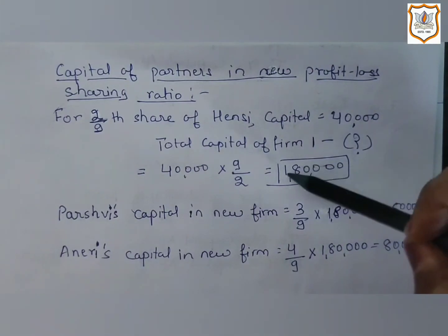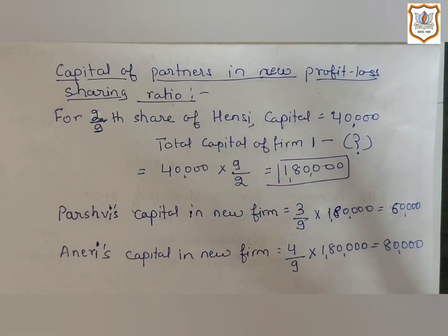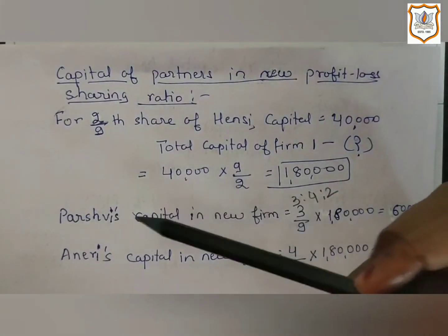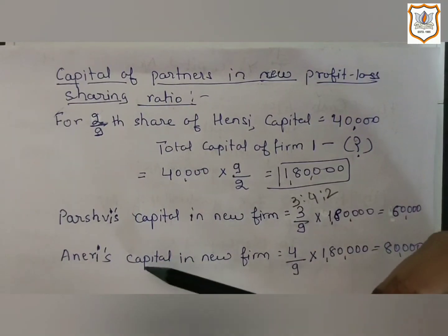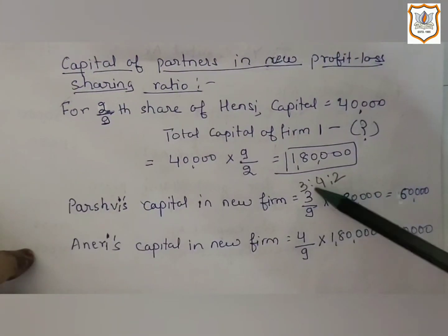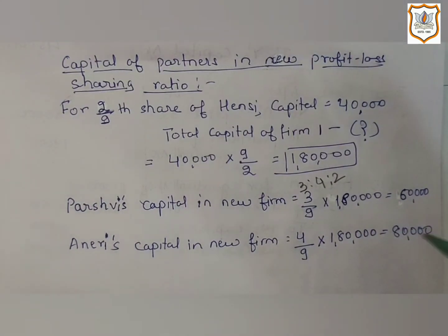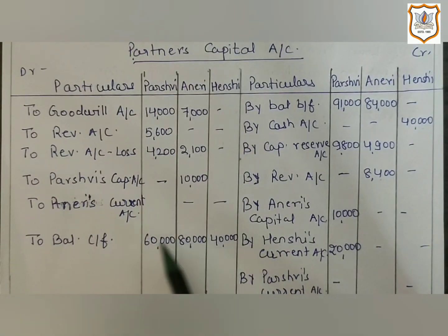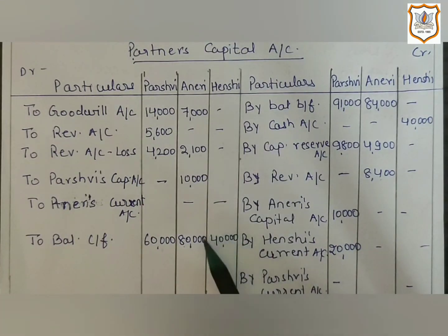Since the new profit and loss sharing ratio is 3:4:2, Parswee's capital in the new firm will be 3/9 × 1,80,000 = 60,000. Aniri's capital in the new firm will be 4/9 × 1,80,000 = 80,000. We record closing balances on the debit side of the Partners' Capital Account: Parswee's closing capital is 60,000, Aniri's is 80,000, and Hansi's is 40,000 as given in the question.